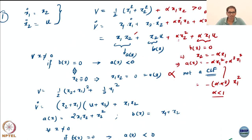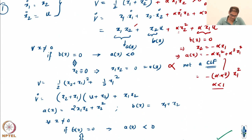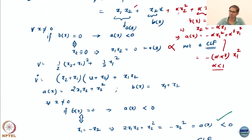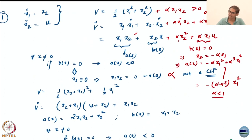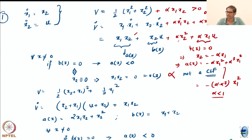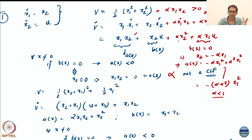Alpha less than 1 works. So all you need to do is add one term α·x₁x₂ with alpha less than 1. Start with the usual quadratic — x₁², x₂², x₃² — then add terms and you will get something. Once you have constructed a CLF, you can construct a controller. Universal formula — if nothing else works, use the universal formula. If you cannot guess, universal formula. Awesome.